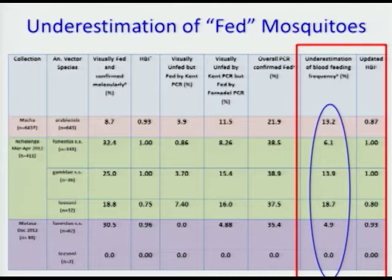But Sumita actually went through and asked: what actually happens to those mosquitoes? Do they actually have human DNA or host DNA in them? She assessed all of them using the molecular tools — both what we call the unfed and the fed mosquitoes from the field collections. And what she found was that a lot of those mosquitoes that didn't have any visible blood in them actually had evidence that they had bitten.